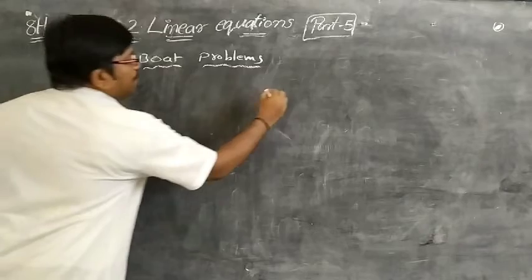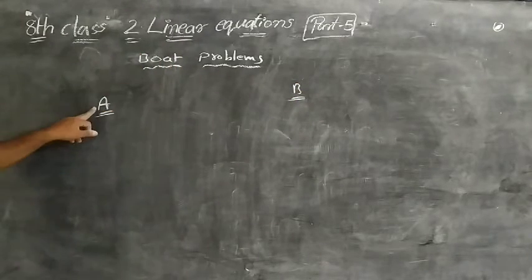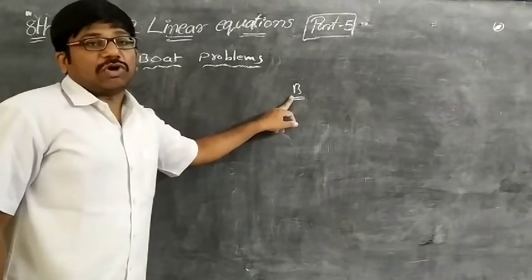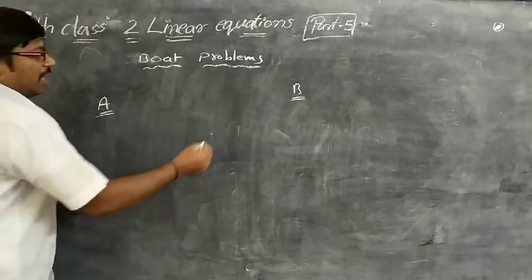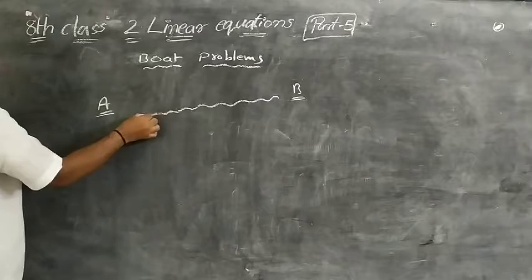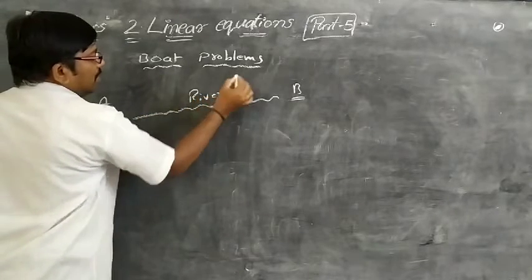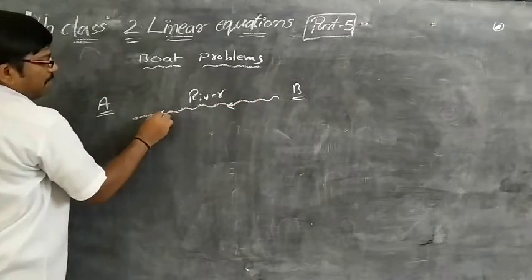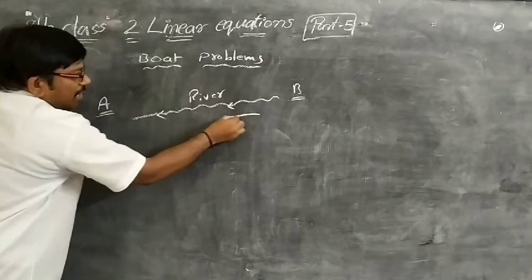A and B are two towns. A river flows between them from B to A. When moving in the direction of the river's flow — from B to A — that direction is called downstream.